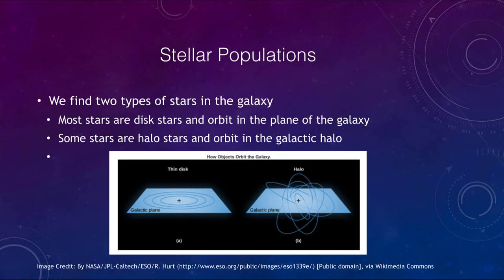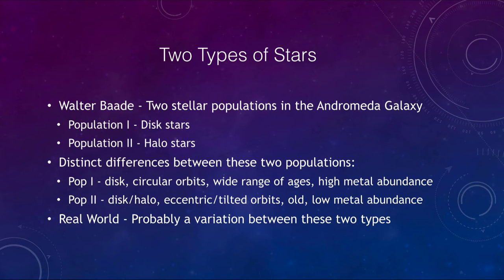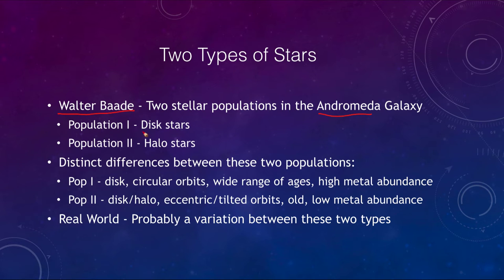So what does this mean with two types of stars? What we see is that they were divided into two stellar populations by Walter Baade when he looked at the Andromeda galaxy. He called the stars in the disk population one stars, and population two stars were the halo stars.